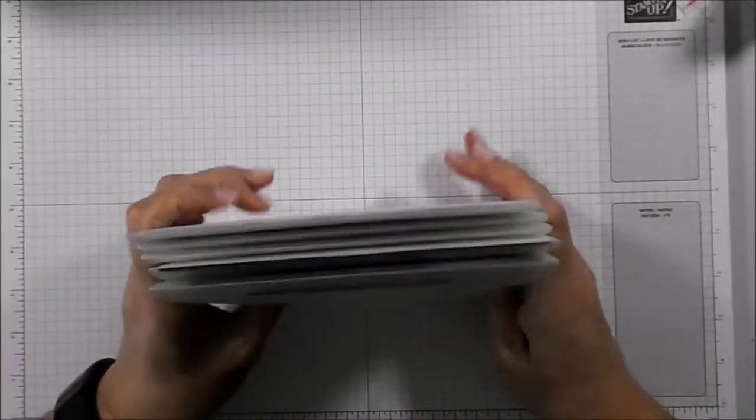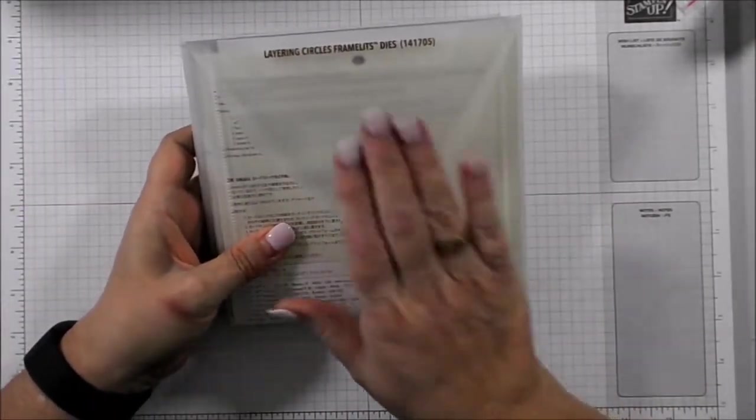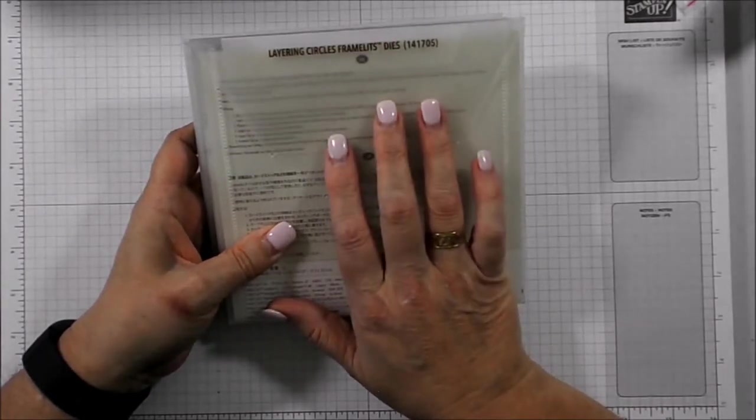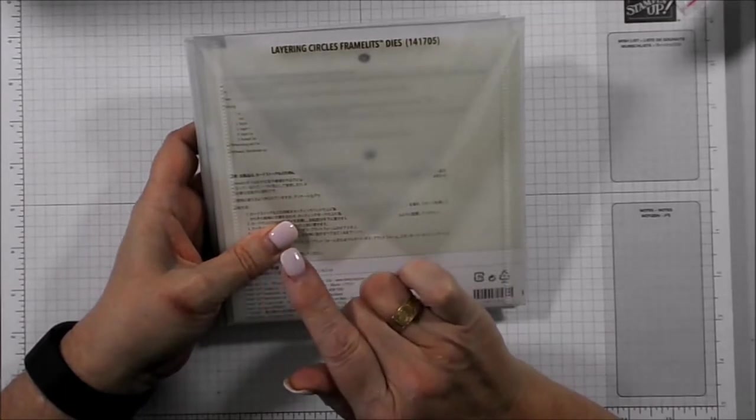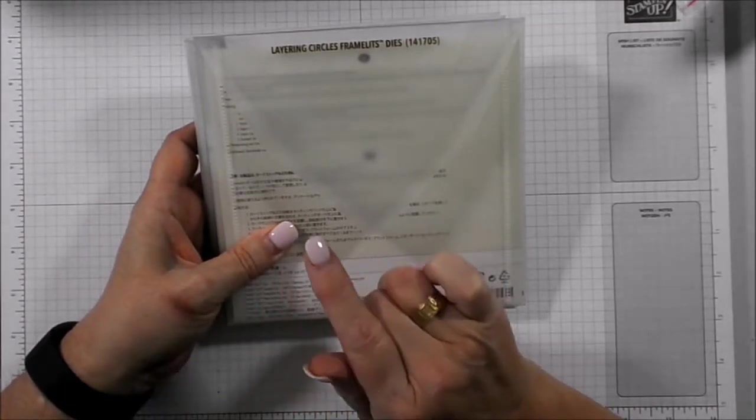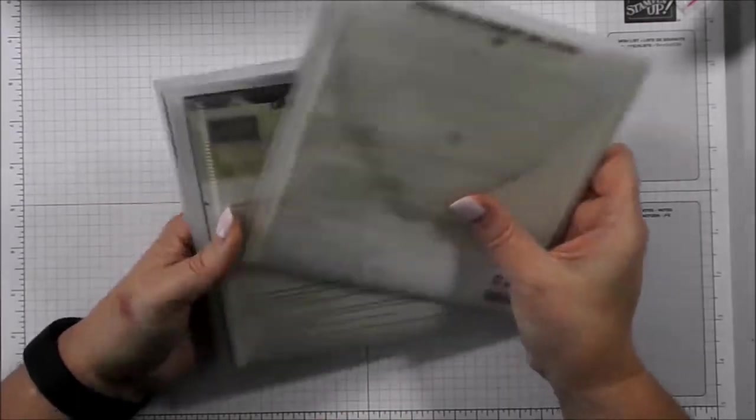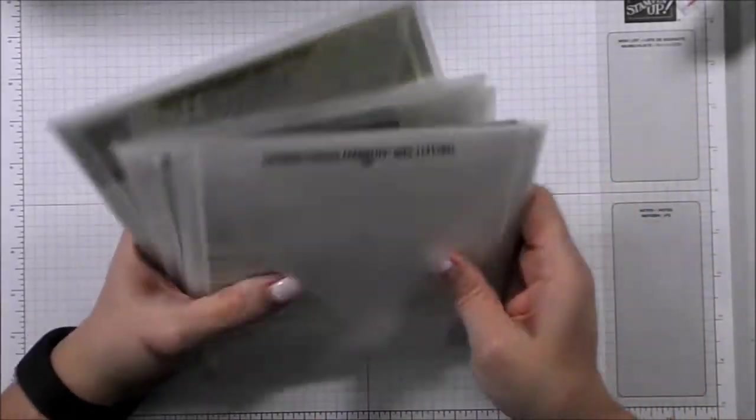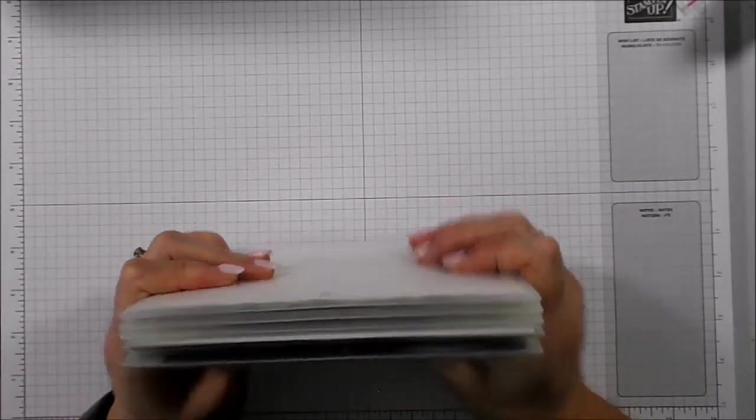The die sets I'm talking about are these large ones. These die sets are usually too big to fit in with the stamps unless you buy a separate stamp case. So I've decided I want these to sit on the desk where I'm going to use them more frequently and they're going to be easier for me to find.